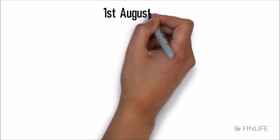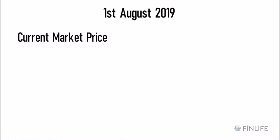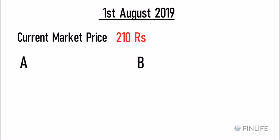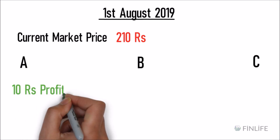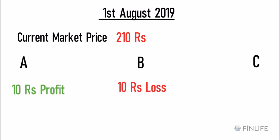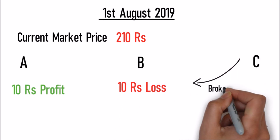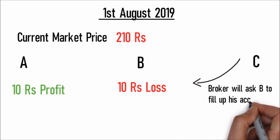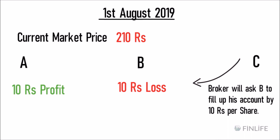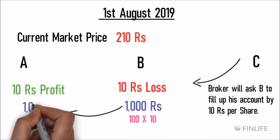For example, on 1 August 2019 if the contract fluctuates and the cash market rate increases by 10 points to 210 rupees, then A is making a profit of 10 rupees per share and B is making a loss of 10 rupees per share. The broker tells B to deposit another 10 rupees per share — so 10 rupees times 100 shares is 1,000 rupees — which goes into A's account as a gain.